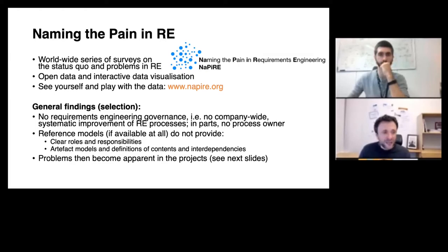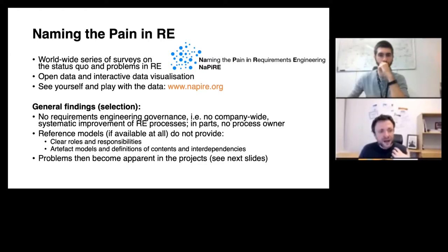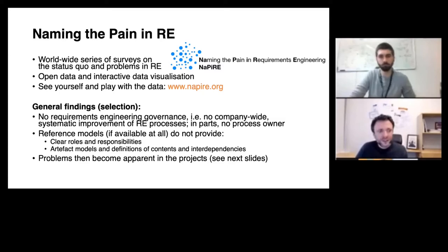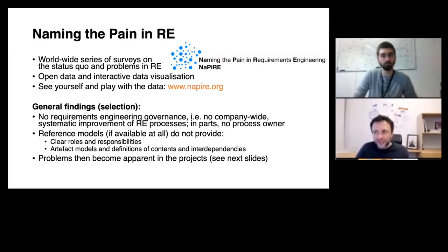All the insights from the data we gather in NaPiRE are openly available through an interactive data visualization, which you can find on the website NaPiRE.org. What are general findings from NaPiRE? Most of the companies we survey — a couple of thousand meanwhile — don't have a dedicated requirements engineering governance. That means they don't have a central role responsible for defining requirements engineering processes. The two consequences are: they don't have a reference model for requirements engineering, and if they have one, it doesn't say a lot. There are no clear roles or responsibilities, no templates, no definitions on how to specify requirements engineering. The way of doing requirements engineering in projects is left to the expertise of the project participants.